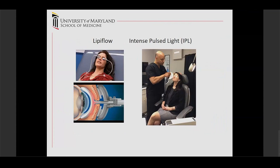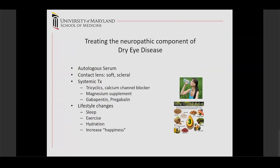LipiFlow and intense pulse light therapy essentially warm the meibomian glands, massage them, and help excrete the sebum, with patients showing some nice results. The neuropathic component of dry eye is more challenging to treat because you don't see it as much on exam. Treatments include autologous serum tears, contact lenses, and systemic therapy with tricyclics, calcium channel blockers, and gabapentin. Lifestyle changes — improving sleep, exercise, and hydration — can also make a real difference.